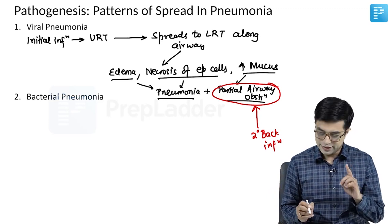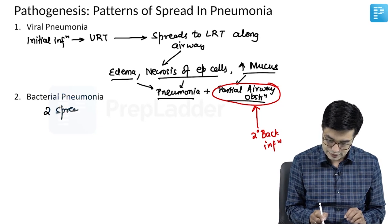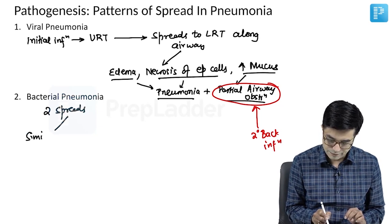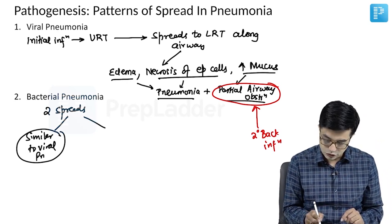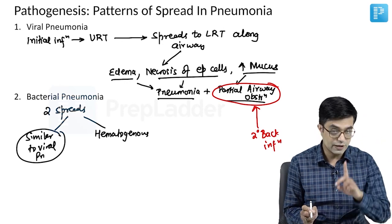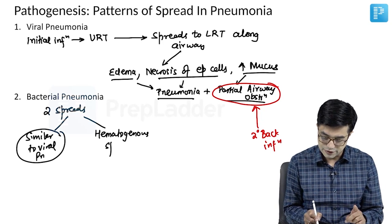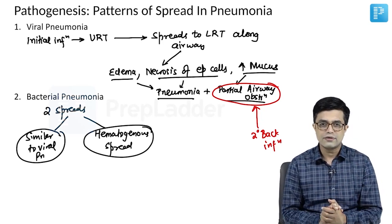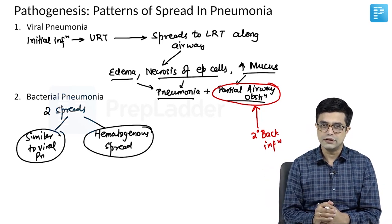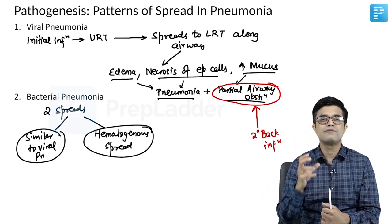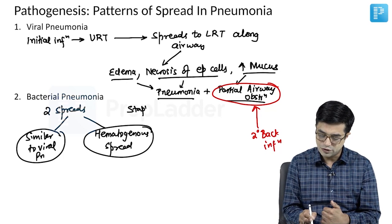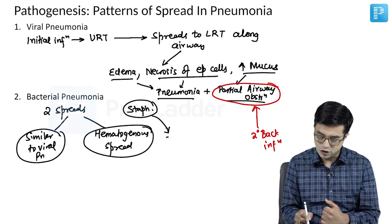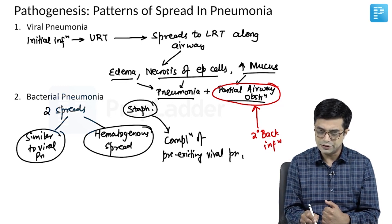The second pattern is bacterial pneumonia. Bacterial pneumonia can have two types of spread. One is similar to viral pneumonia — spread along the lower respiratory tract. The second is through the hematogenous route. Viruses do not spread through the hematogenous route. In hematogenous spread, there is first bacteremia or septicemia, then bacteria reach the alveoli directly through circulation and produce inflammation. Those with hematogenous spread will not have upper respiratory tract features but will have systemic features with pneumonia. A rare third mode, mainly seen with Staph aureus, is superinfection complicating a pre-existing viral pneumonia.